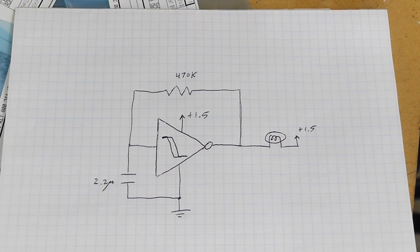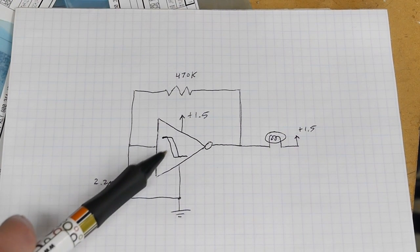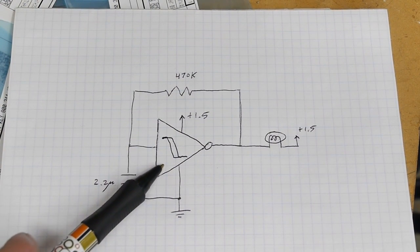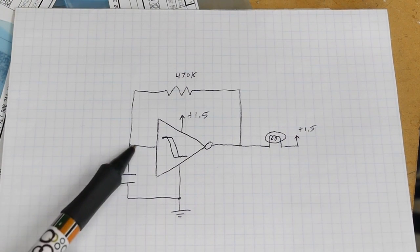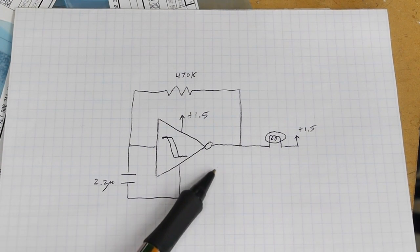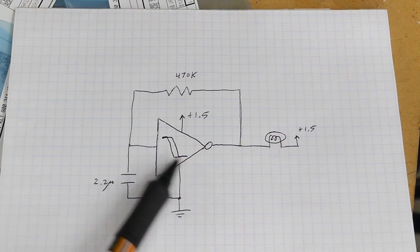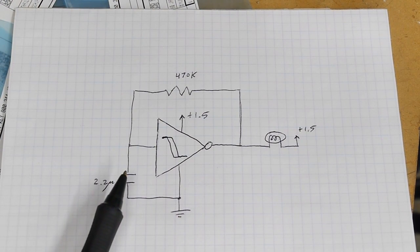Now the trick is that we definitely need this inverter to be a Schmidt trigger inverter. If it's not a Schmidt trigger that means there is some input voltage for which this will be a stable circuit. So if you tried to build this and it worked and it wasn't a Schmidt trigger you might get one or two oscillations out of it.